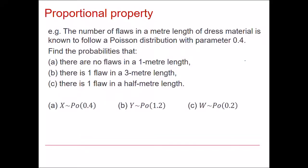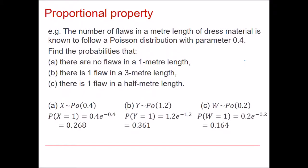So I can define each of the distributions as follows. Notice that I've used different letters for each one because x is the number of flaws in 1 metre, y is the number of flaws in 3 metres, and w is the number of flaws in half a metre length of cloth. Once you define the distributions like this, we simply calculate probabilities as before.